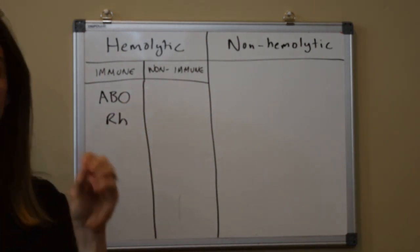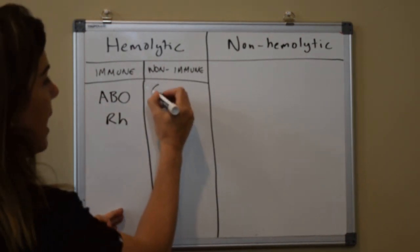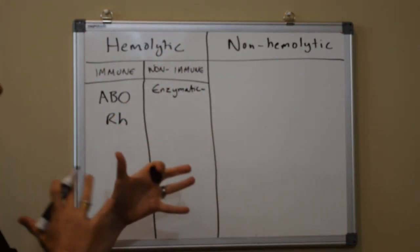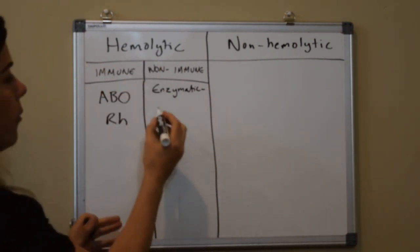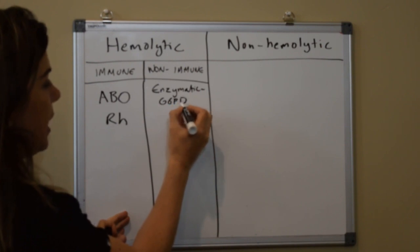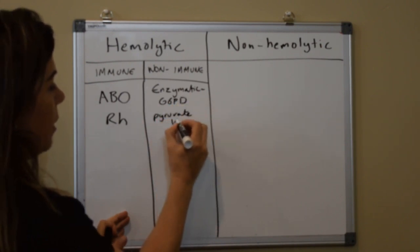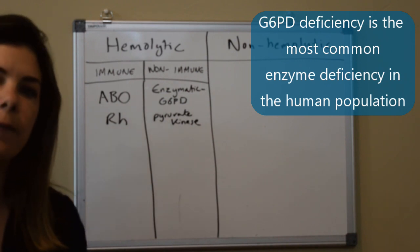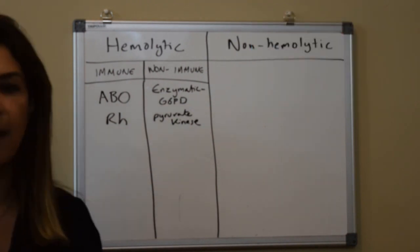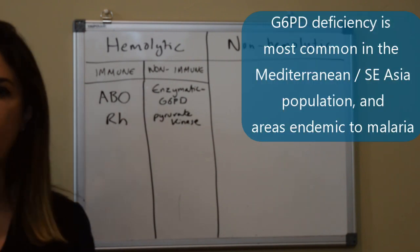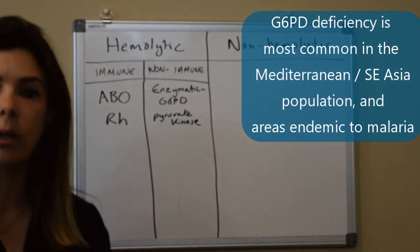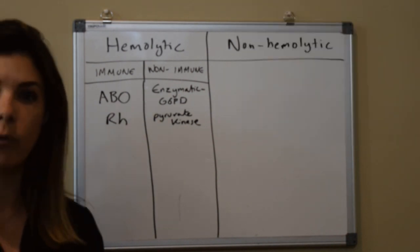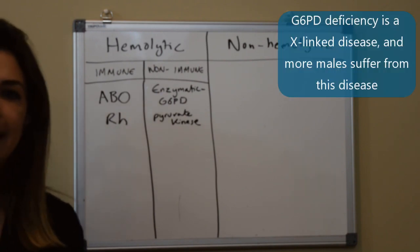The two most common categories of non-immune hemolysis are enzymatic defects in the red blood cell. The two most common are G6PD deficiency and pyruvate kinase deficiency. G6PD deficiency is actually the most common enzyme deficiency in the human population, so you will definitely come across it. It is most common in Mediterranean and Southeast Asian populations, as well as areas endemic to malaria such as much of Africa, which also has a higher risk of G6PD deficiency.